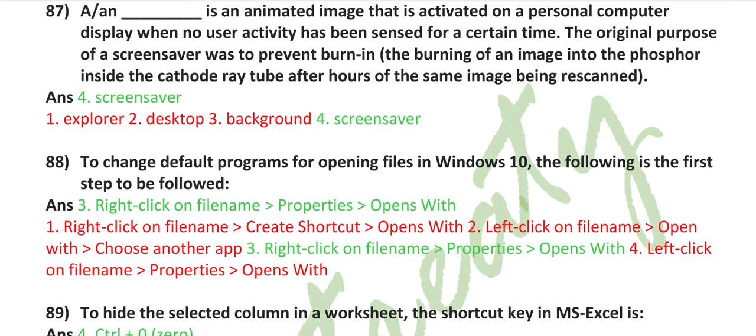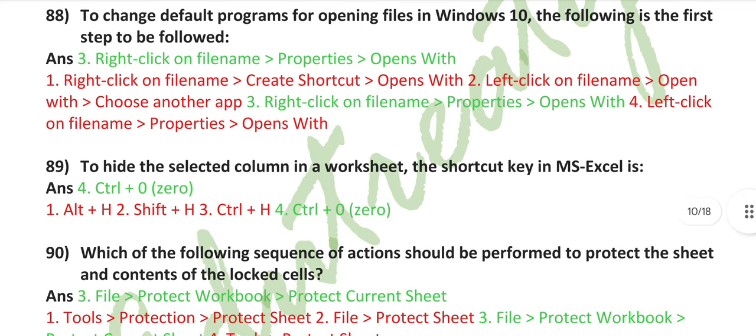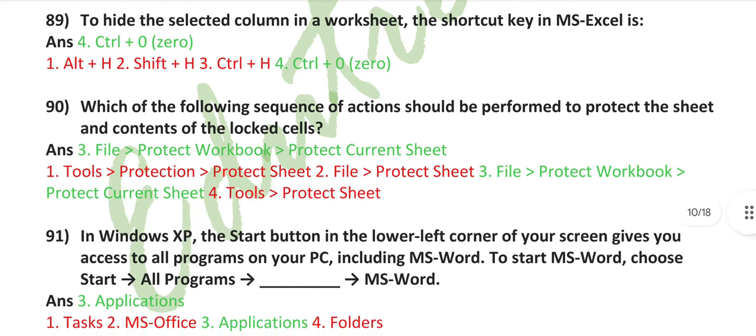After hours of the same image being scanned, it's due to a screen saver to change. To change the default program for opening files in Windows 10, the following is the first step to be followed: right-click on file name, then go to properties, then open with. To hide the selected column in a worksheet, the shortcut key in MS Excel is Control plus 0.